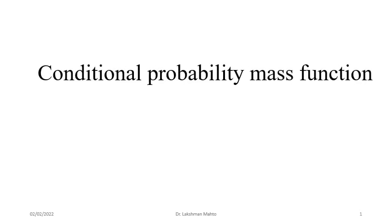This is lecture 16, where we will discuss in detail about conditional probability mass function. As in the first module we discussed conditional probability, by restating that definition we can talk about the multiplication rule, the law of total probability, and various applications. Similarly, when we have the idea of conditional probability mass function, from that we can define joint probability mass function and talk about the law of total probability for distributions.